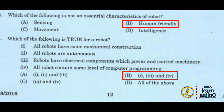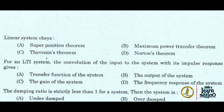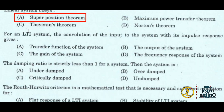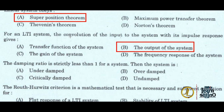Next question: a linear system obeys option A, the superposition theorem. Next, for an LTI system, the convolution of the input to the system with its impulse response gives the output of the system — input convolved with impulse response equals output.